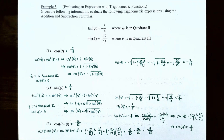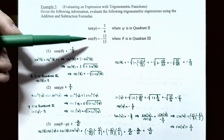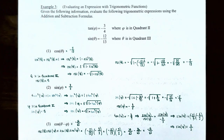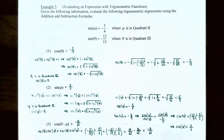Example three: evaluating an expression with trigonometric functions. Given the following information, evaluate using the addition and subtraction formulas. This time, tangent(φ) = -3/4 and φ is in quadrant 2. And sine(θ) = -12/13 and θ is in quadrant 3.